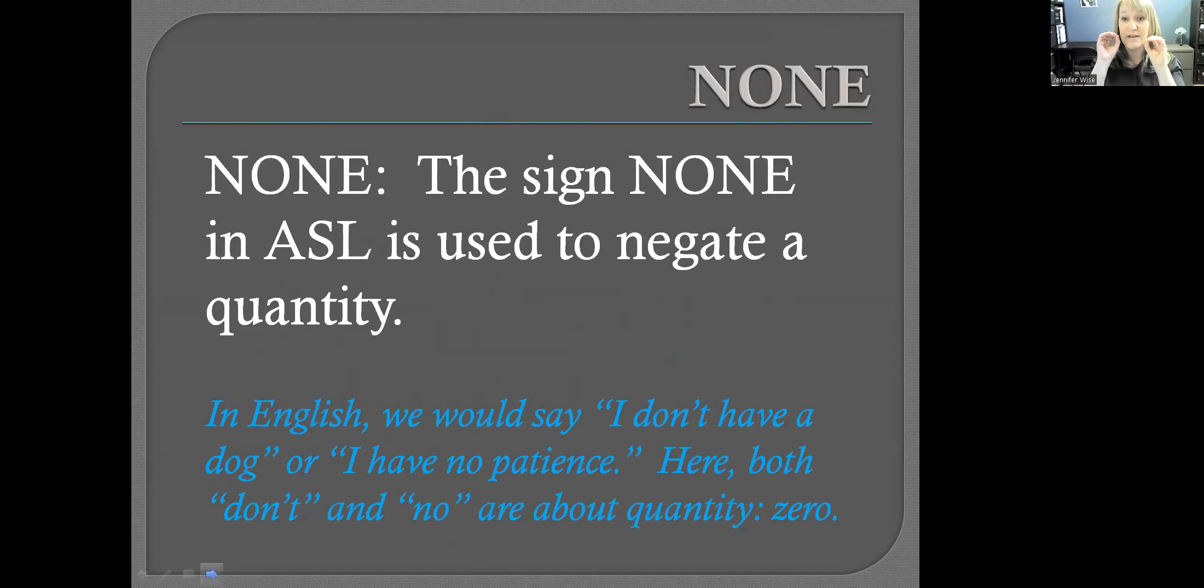The last one to talk about is that sign for none. The sign none in ASL is used to negate a quantity. In English, we would say I don't have a dog or I have no patience. Here, both don't and no are actually about quantity, zero. I have zero dogs and I have zero patience.